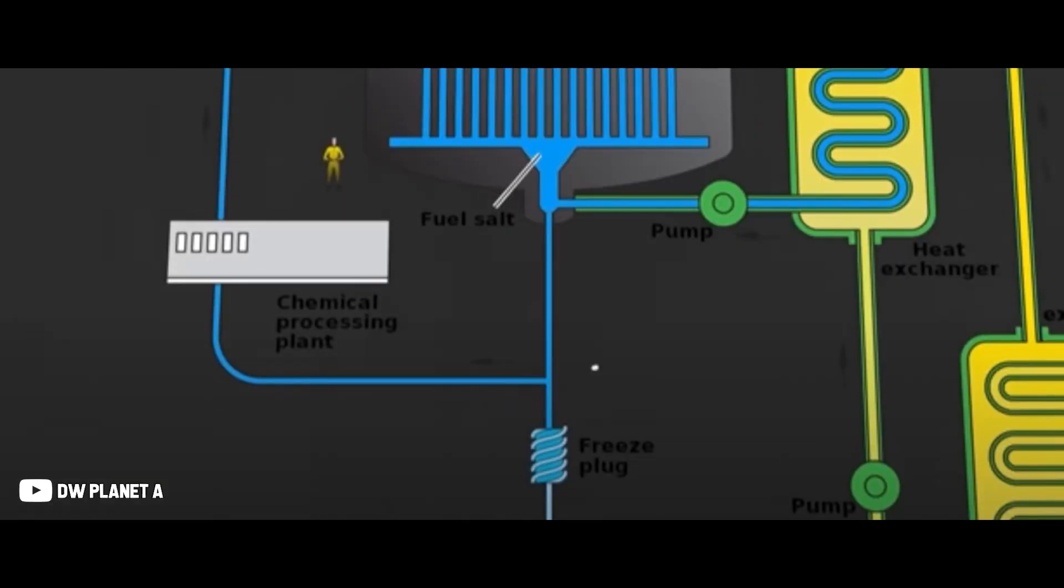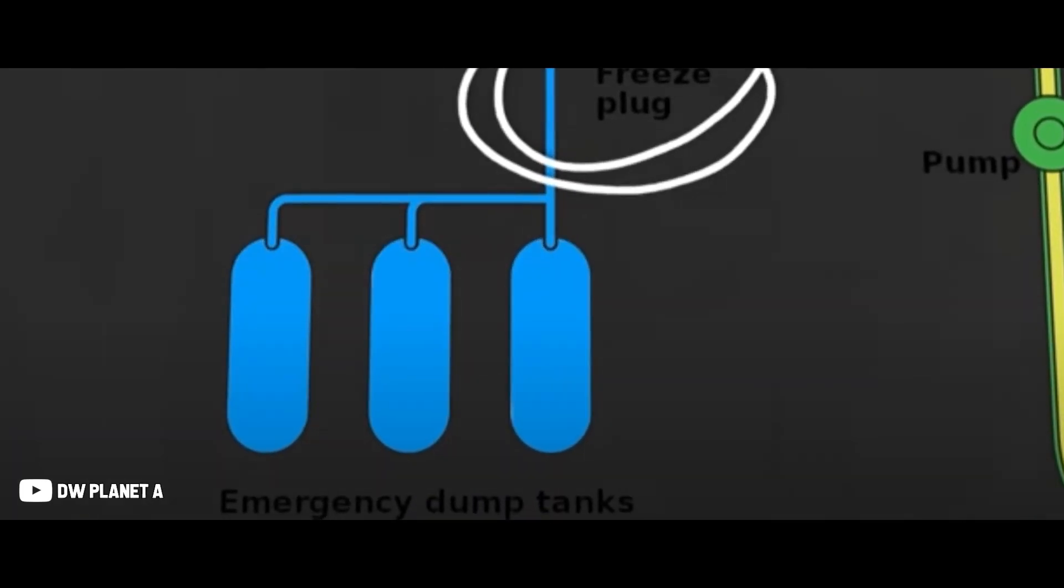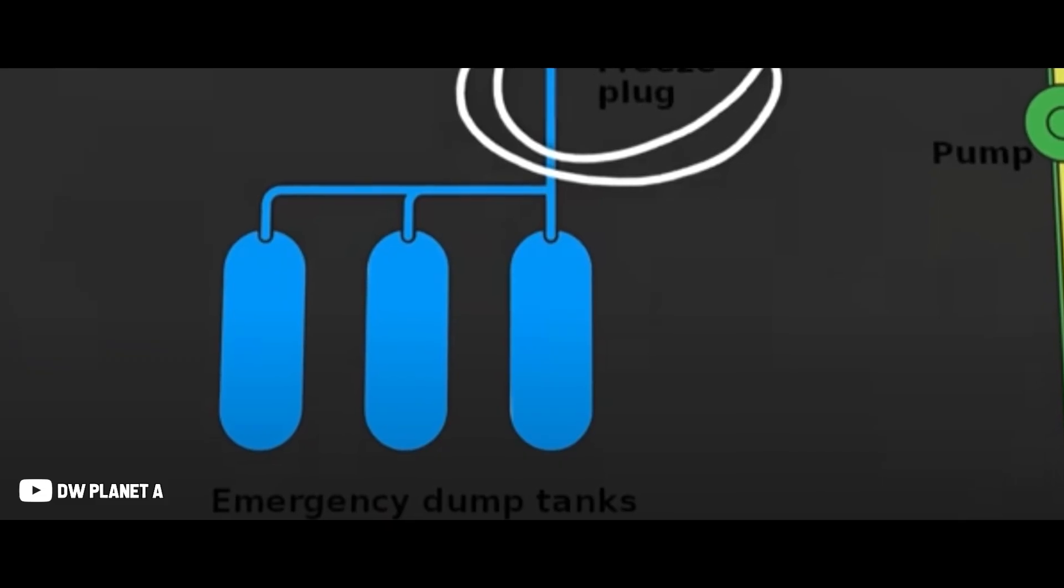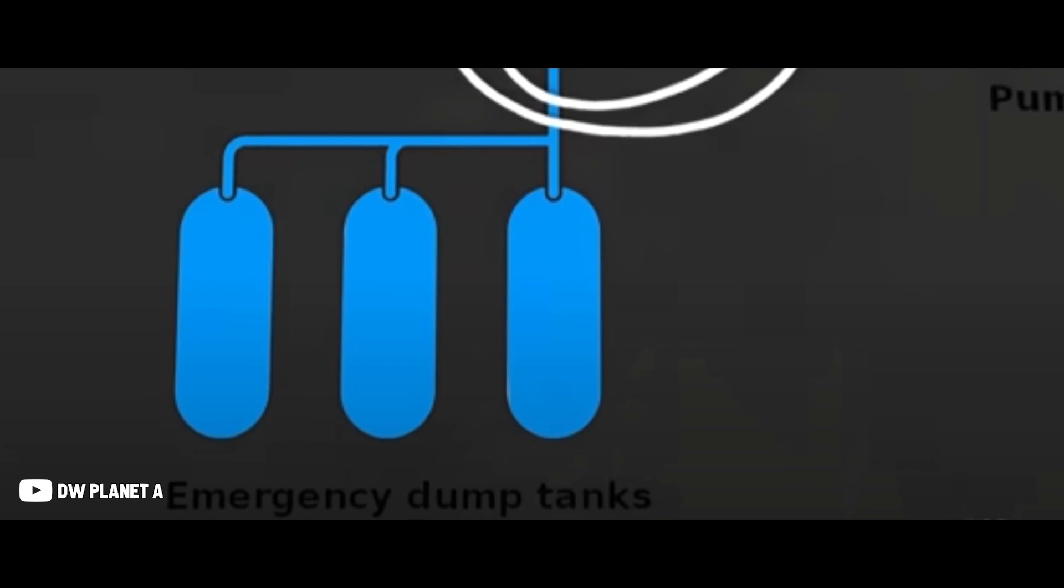That's because molten salt reactors are designed with a built-in safety mechanism. At the bottom, there's a freeze plug, which is a section kept solid by coolers. If the reactor overheats, the plug melts, and the liquid fuel drains into separate passive cooling tanks where it cools down safely.